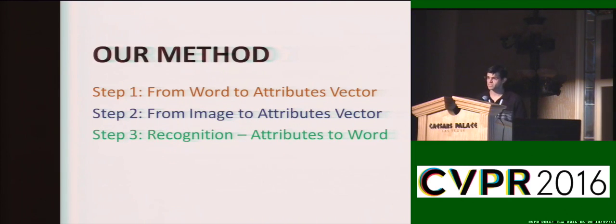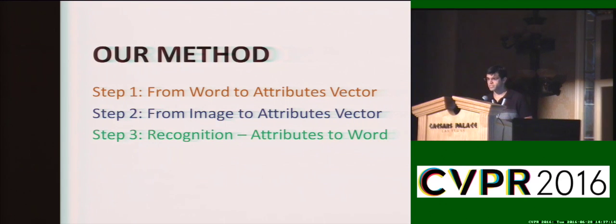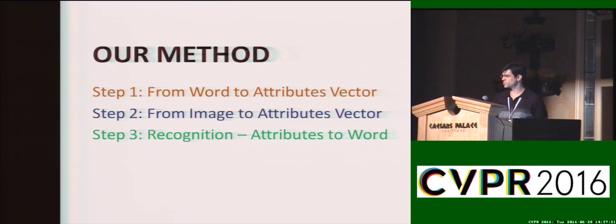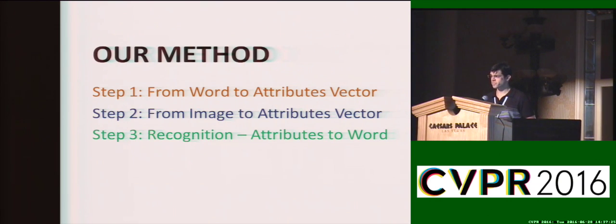So without further ado, let me present our method. There are three steps to understand: the first is how to convert a word into an attributes vector, the second is how to convert an image into an attributes vector, and third, how we use the previous two steps to do the actual recognition.